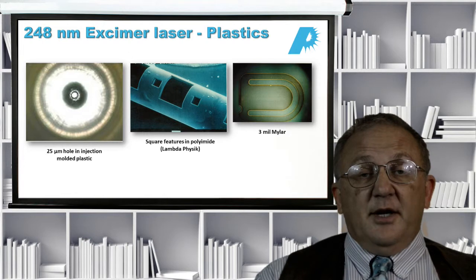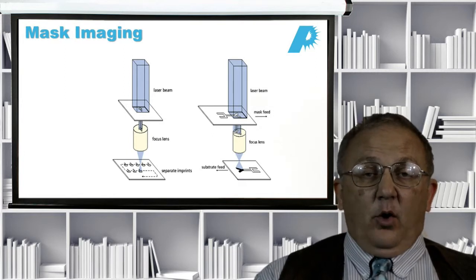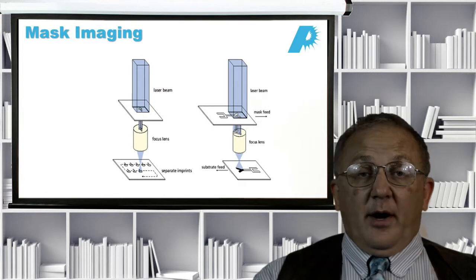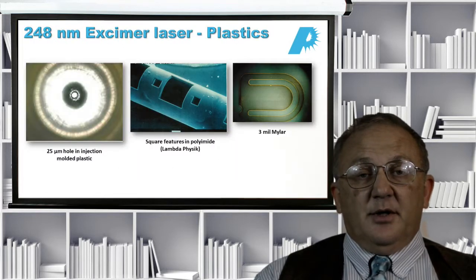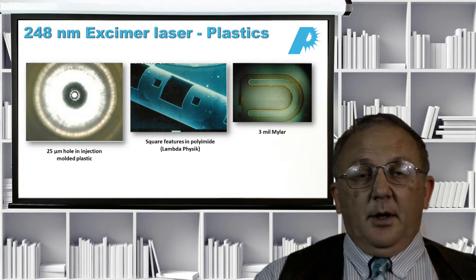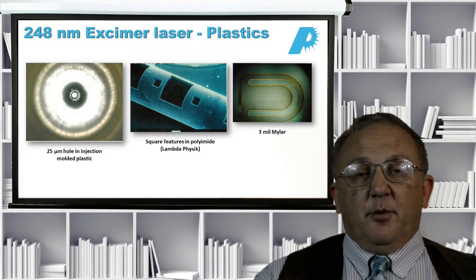In the middle, you see some square features. With the excimer laser, it's very easy to make square features because we actually image a mask on target. So, if you want a round hole, we use a round mask. If you want a square hole, we use a square mask. And the holes that you see there are on the order of a couple hundred microns on a side. On the right-hand side, you see some 3 mil mylar that's been processed with a UV laser, and this is a flow-regulating device that's used in a medical breathing apparatus.